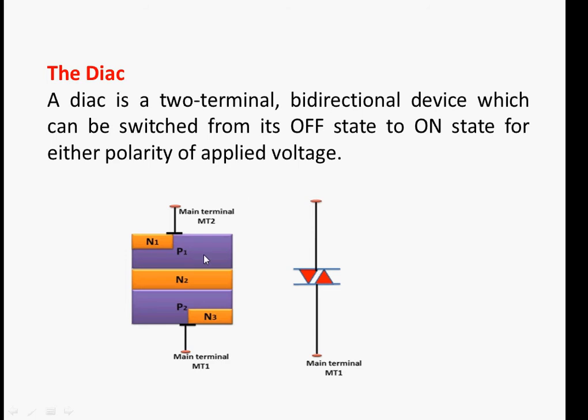like this terminal is positive MT2 and this terminal is negative, then the current will flow like this from the connecting terminal to P1, then N2, then P2, then N3 and then through this terminal. So the current will flow in both directions. The current flow is bi-directional. Along this DIAC, the current flows in both ways. That's why it's called the bi-directional device.